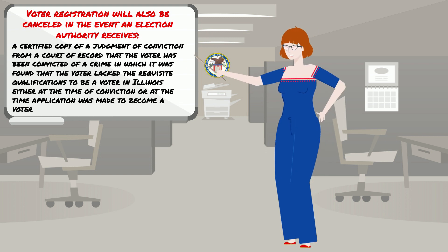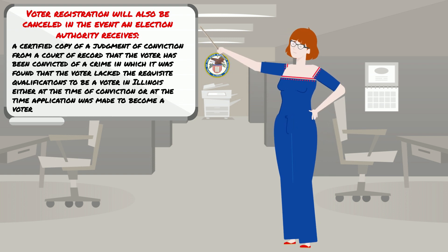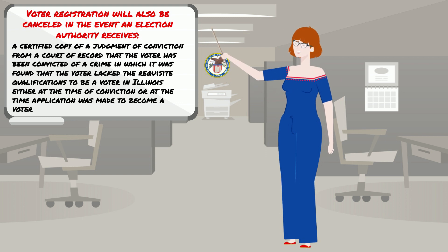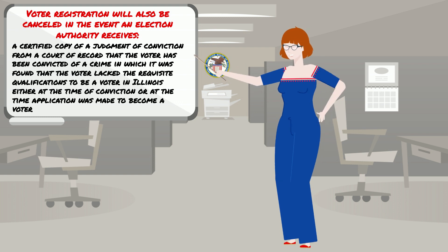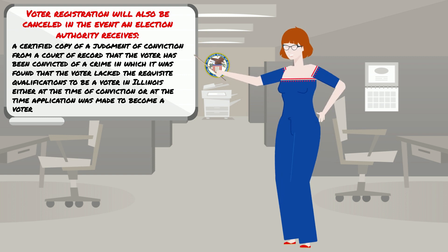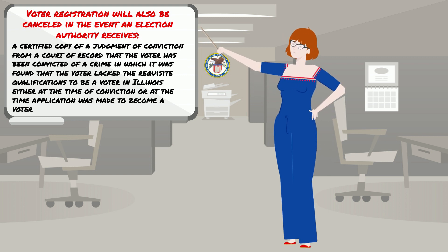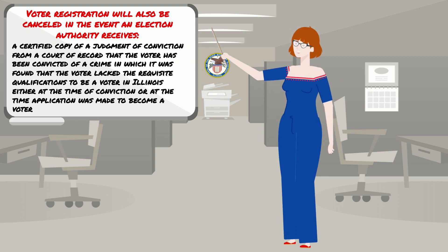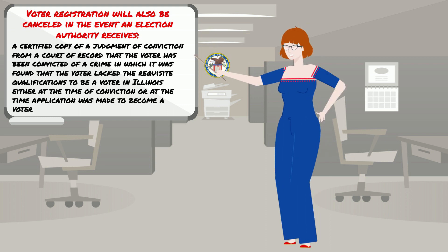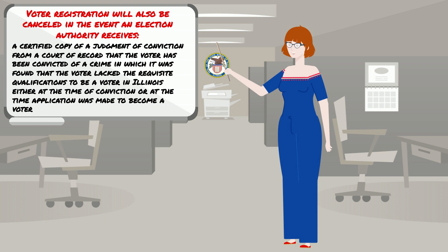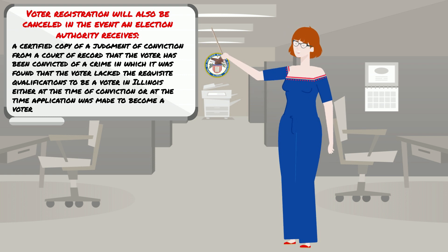A certified copy of judgment of conviction from a court of record that the voter has been convicted of a crime in which it was found that the voter lacked the requisite qualifications to be a voter in Illinois, either at the time of conviction or at the time the application was made to become a voter, whether or not the voter was incarcerated as a result of such conviction.